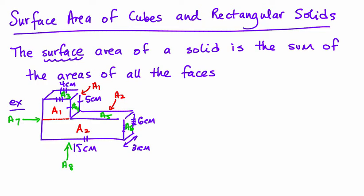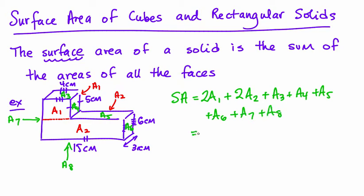So the total surface area for this entire shape would be, I've got two area number 1s, and two area number 2s, and an area number 3, and an area number 4, and an area number 5, and an area number 6, and an area number 7, and an area number 8. And in this case, all of those are rectangles.